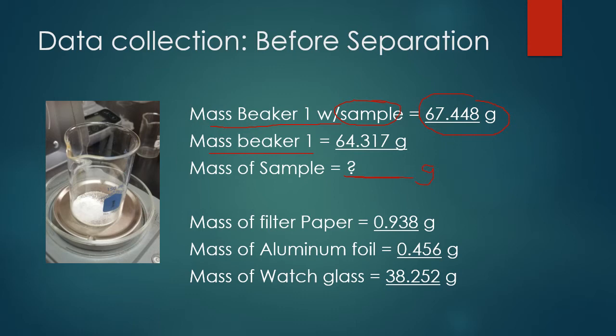Next, the filter paper is also massed at 0.938 grams, a piece of aluminum foil which we'll be using later in the experiment at 0.456 grams, and then a watch glass at 38.252 grams. Fill that data into your table for before separation as well.